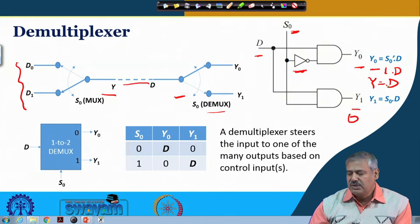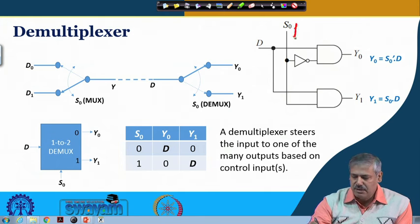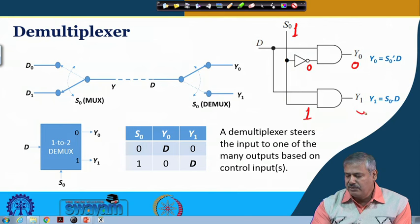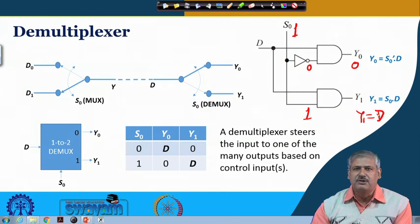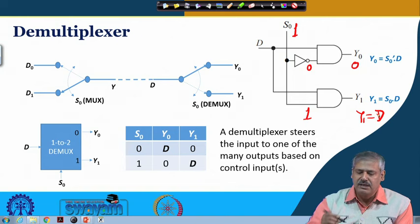When S is 1, Y0 is held at 0 and Y1 will get the value of D. So whenever D changes from 1 to 0, Y1 changes from 1 to 0, and when D changes from 0 to 1, Y1 will also change from 0 to 1.